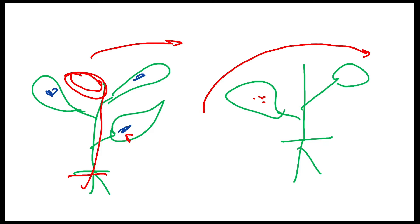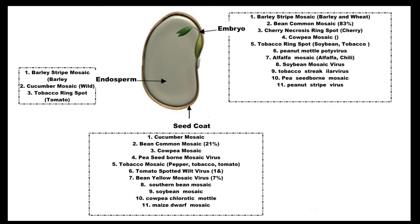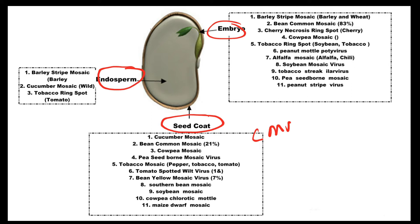Virus can be present in three parts of the seed — either in the seed coat, or in the endosperm, or in the embryo. Examples to remember: in seed coat — cucumber mosaic virus, bean mosaic virus, and cowpea mosaic virus; in endosperm — barley stripe mosaic virus, cucumber mosaic virus, and tobacco ringspot virus; in embryo — barley stripe mosaic virus, bean common mosaic virus, cowpea mosaic virus. So cowpea mosaic virus is present in both seed coat and embryo.